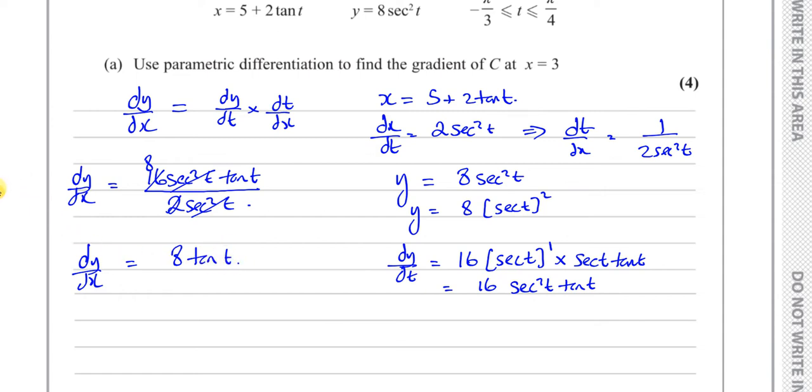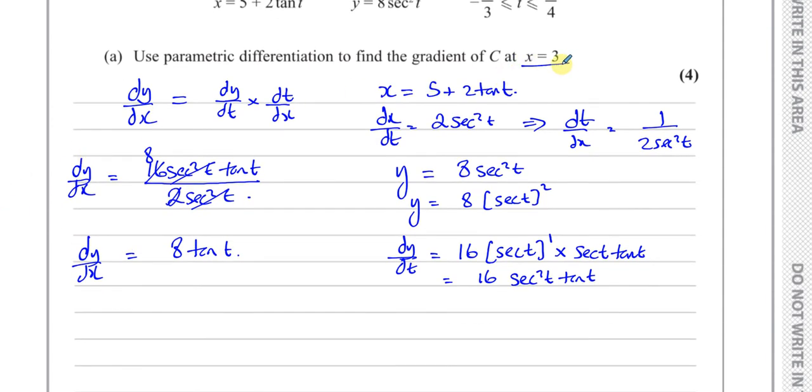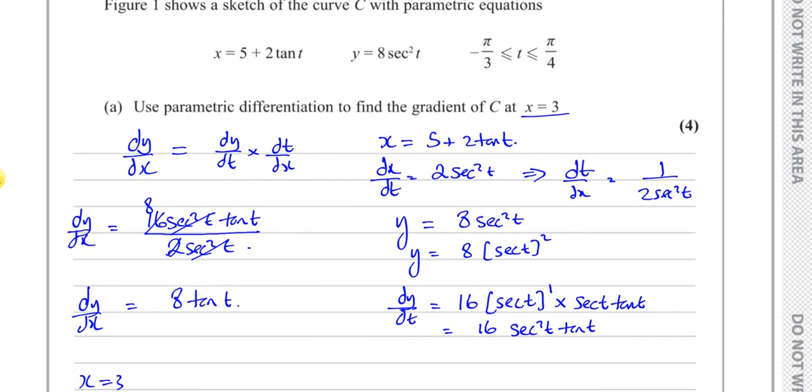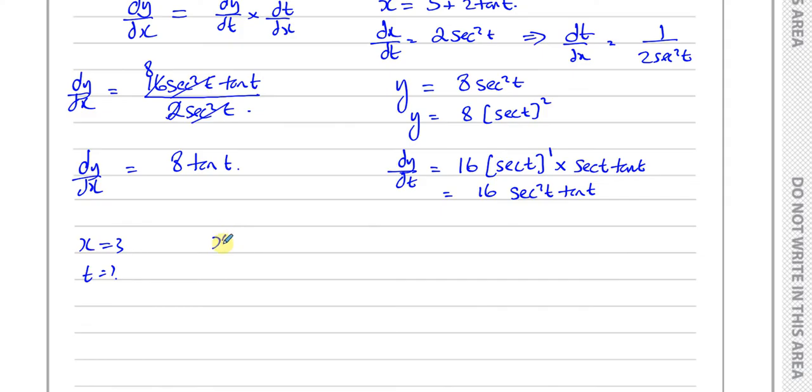Now, they ask us to find dy dx when x equals 3. So we're going to find when x equals 3, what is t? If we find what t is when x equals 3, then we'll be sorted out. So we can rearrange this formula. We know x equals 5 plus 2 times tan t.